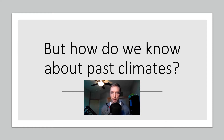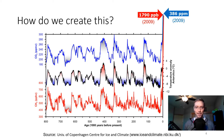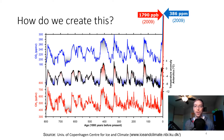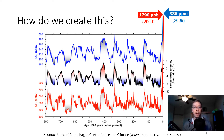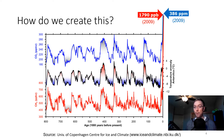But how do we know about past climates? This is a really important question. If you remember from way back, this figure presents results from the Antarctic EPICA Dome C ice core showing development of temperature in Antarctica and concentrations of atmospheric greenhouse gases — carbon dioxide in blue, methane in red — over the last 800,000 years. How do we get this? Because we weren't there with a thermometer 800,000 years ago. Paleoclimate proxies are the way we do that.